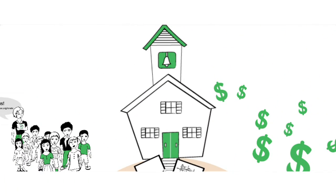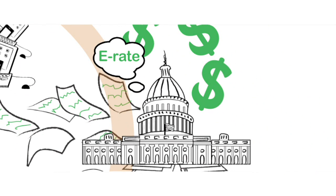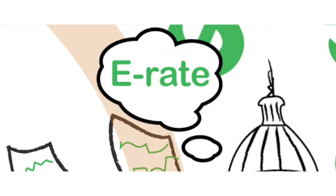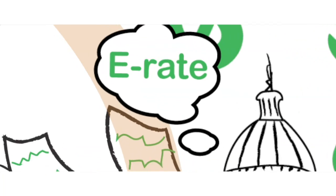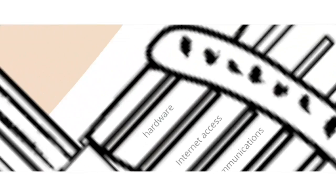To help, the government created the Schools and Libraries Program of the Universal Service Fund, more commonly known as E-Rate. Through E-Rate, schools and libraries can apply for funds to purchase hardware, internet access, and telecommunications to connect their students to 21st century learning opportunities.